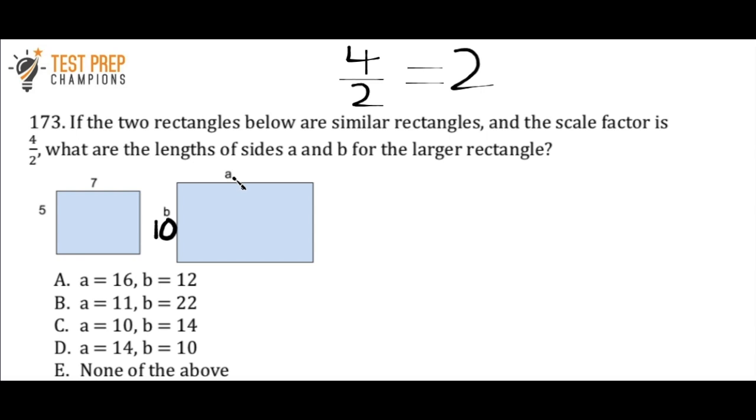Now to find the length of side A, I come over to my 7, and I'm going to do 7 times 2. So since 7 times 2 is 14, I know that side A is length 14. So the correct answer here is D.